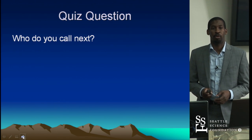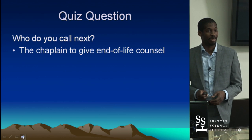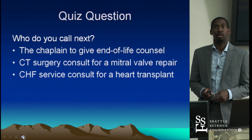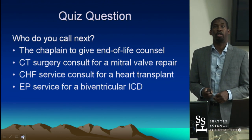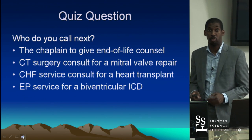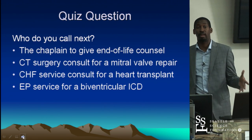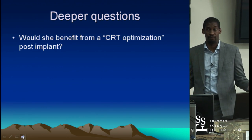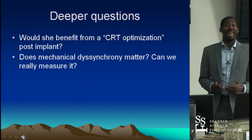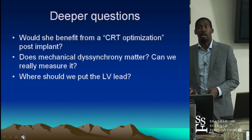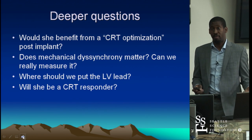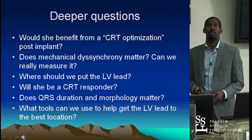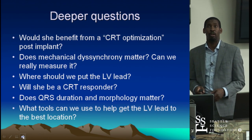Here's the quiz question: who gets the next call on this patient? Do you call the chaplain for last rites? Cardiac surgery consult to repair that moderate MR? The heart failure service for heart transplant workup? Or the EP service for a biventricular ICD? Initially, this is a class 1 guideline indication for CRT implantation. Deeper questions include: would she benefit from CRT optimization post-implant, does mechanical dyssynchrony matter and can we measure it, where should we place the LV lead, will she be a CRT responder, what factors predict response, and what is the importance of QRS duration and morphology.